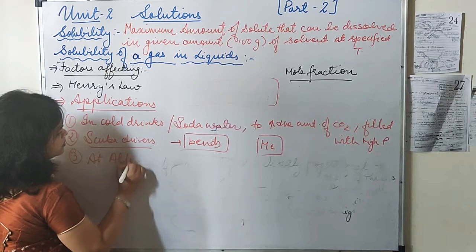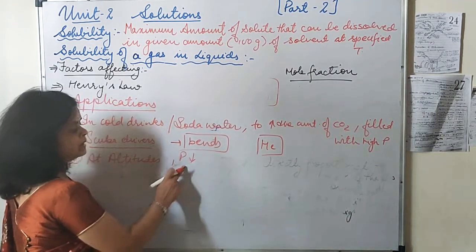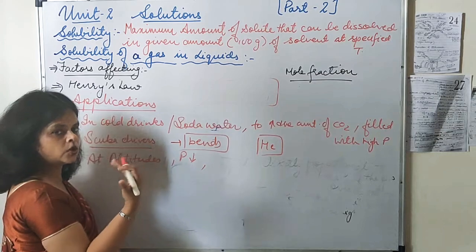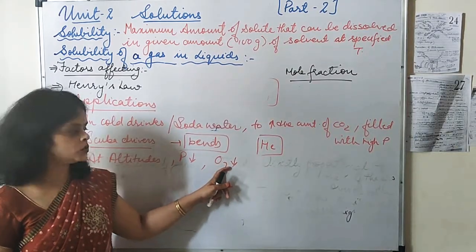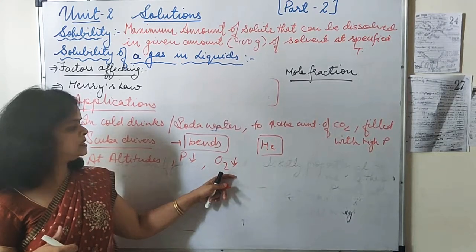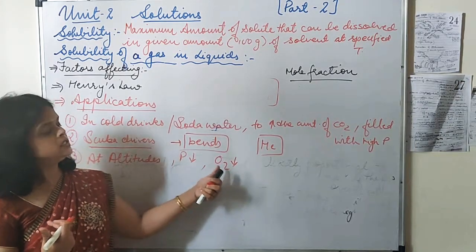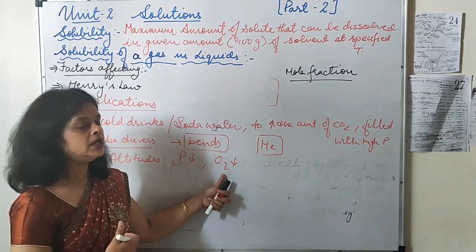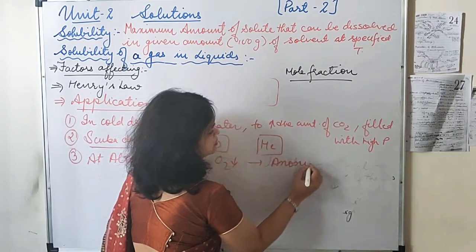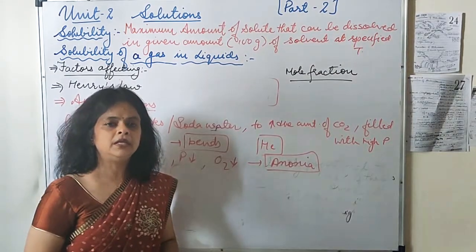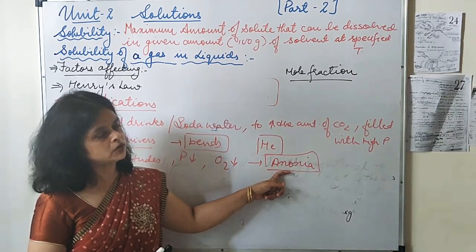The third application is at high altitudes. At high altitudes, atmospheric pressure is low, so the oxygen dissolved in the blood is also low. This gives a lesser amount of energy to blood cells. Climbers going to high altitudes experience less dissolution of oxygen in their blood due to low atmospheric pressure, causing tiredness and a condition called anoxia, in which they feel difficulty breathing and lack of energy.